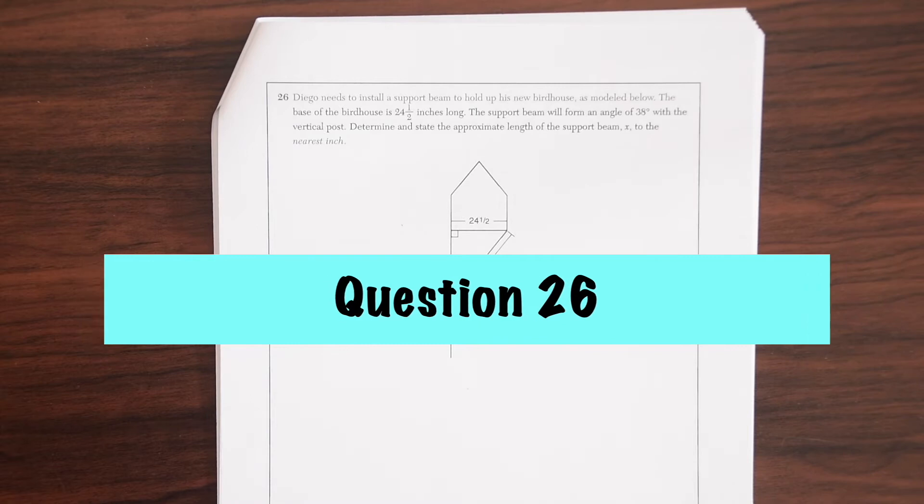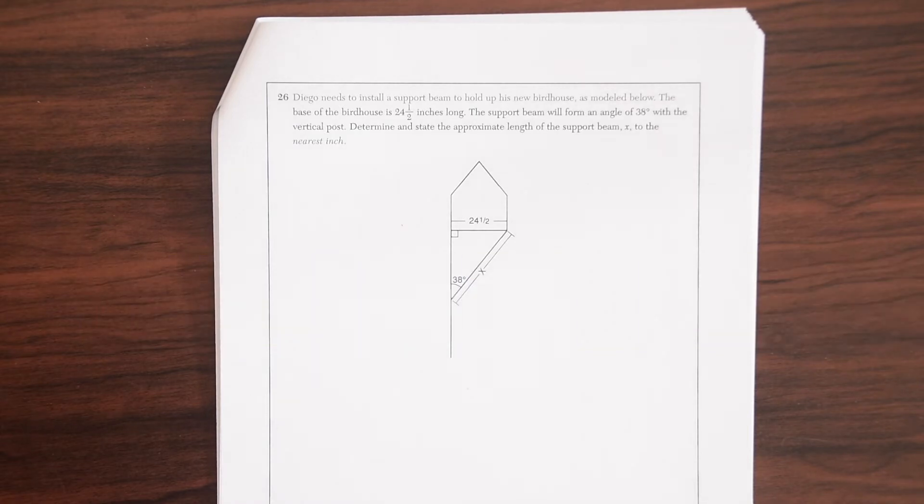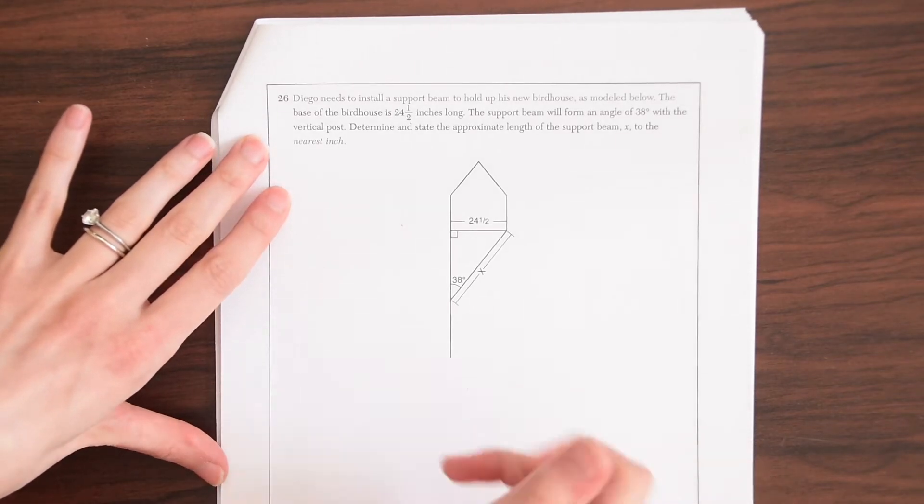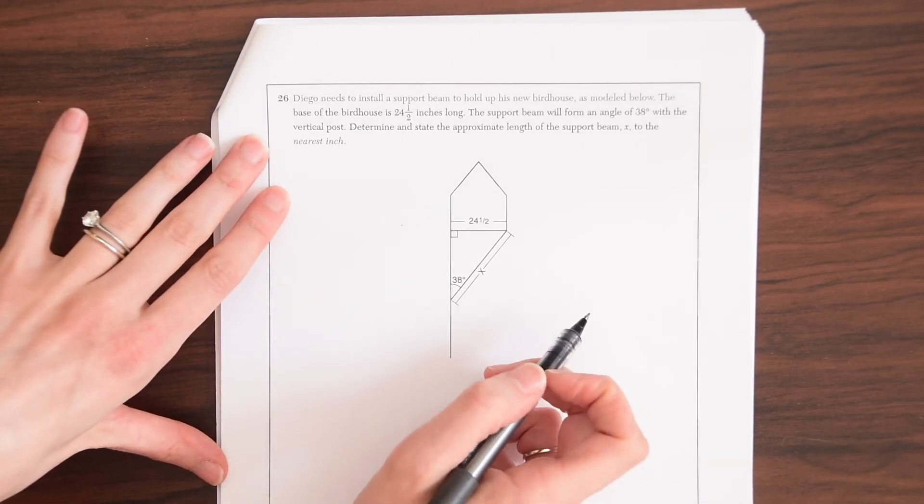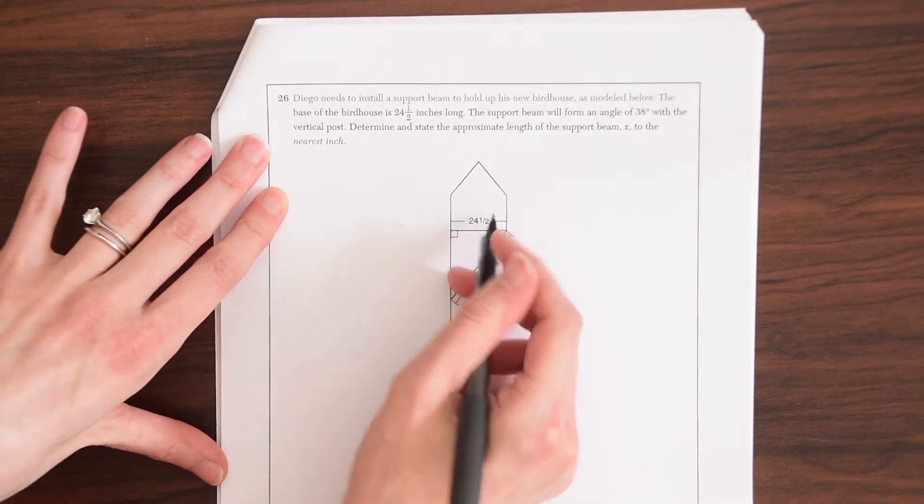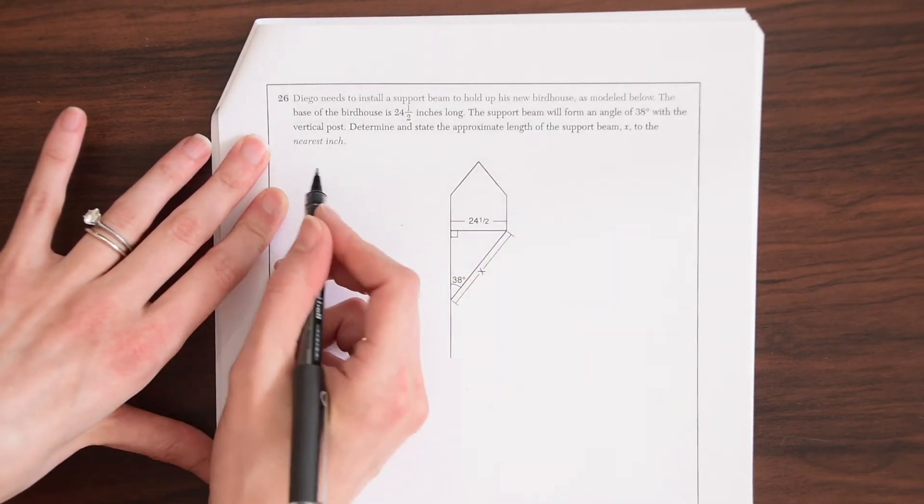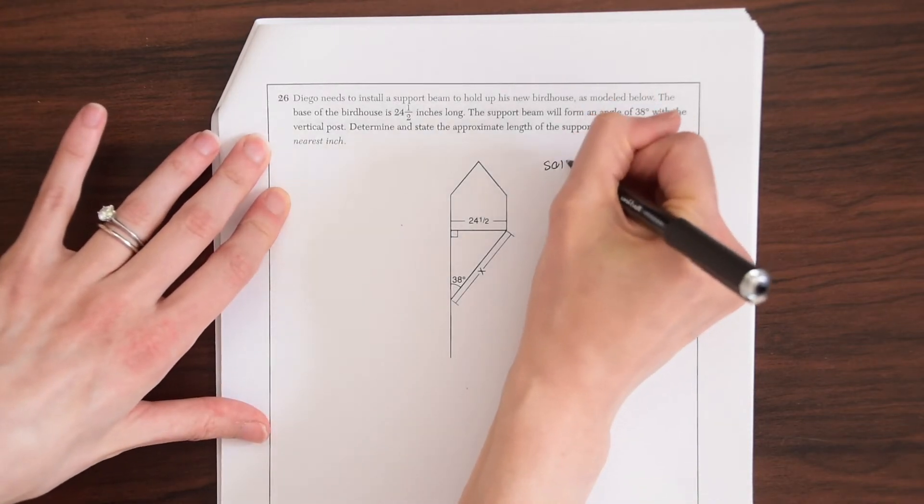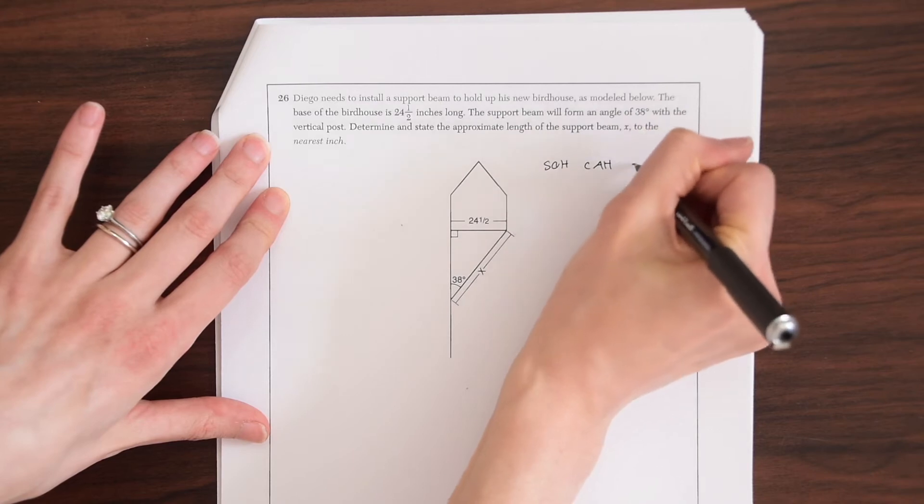Diego needs to install a support beam to hold up his new birdhouse as modeled below. The base of the birdhouse is 24 and a half inches long. The support beam will form an angle of 38 degrees with the vertical post. Determine and state the approximate length of the support beam x to the nearest inch. So we see we're dealing in inches here. We have an inch, this is inches and they want the answer in inches also. So this looks like a nice SOHCAHTOA trigonometry question. So let's write that out. SOHCAHTOA.